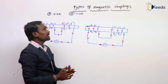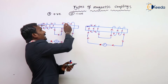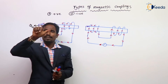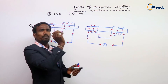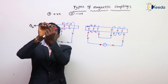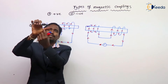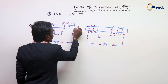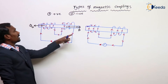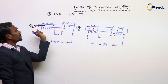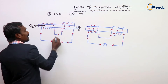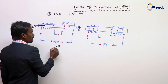What about coil B? Here the current direction is downwards. Downwards, nothing but like this. Outside the iron rod downwards — now the flux direction is like this. This is flux B. See here, both are opposite to each other. If both the fluxes are opposite to each other, then the magnetic coupling is negative magnetic coupling.